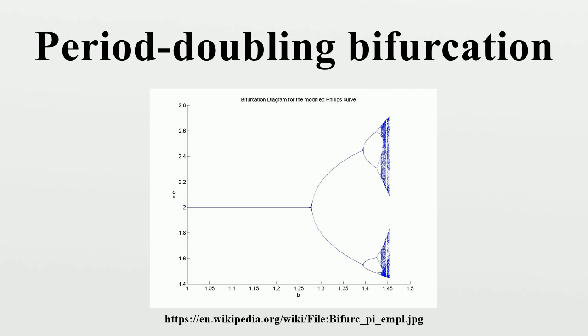With the doubled period, it takes twice as many iterations as before for the numerical values visited by the system to repeat themselves.